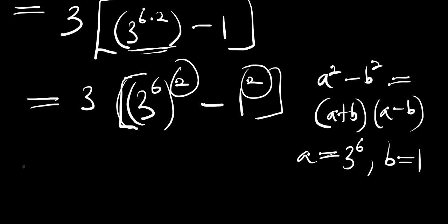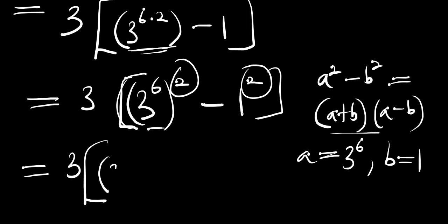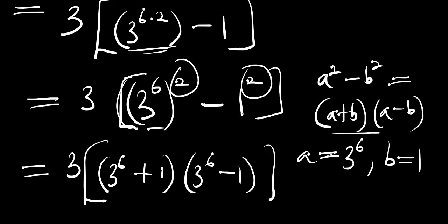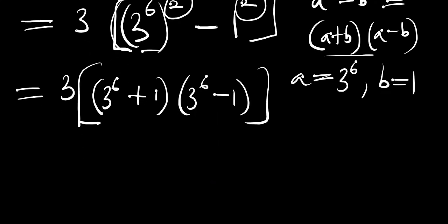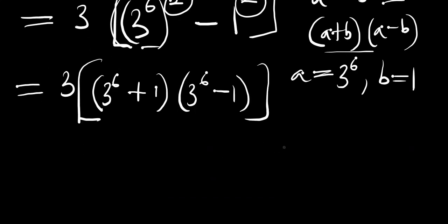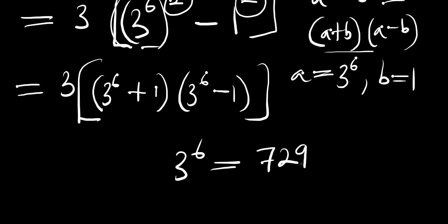So we get 3 times (3^6 + 1)(3^6 - 1). Now let's find the value of 3^6. 3^6 equals 729.